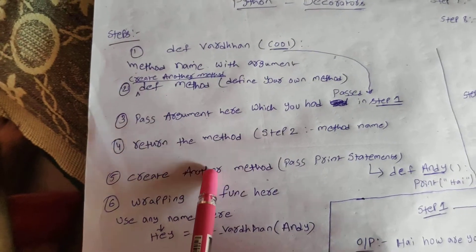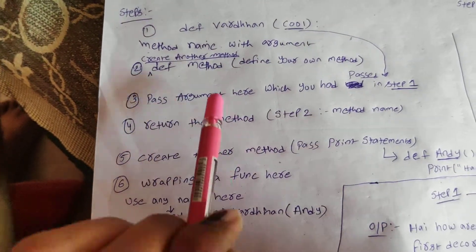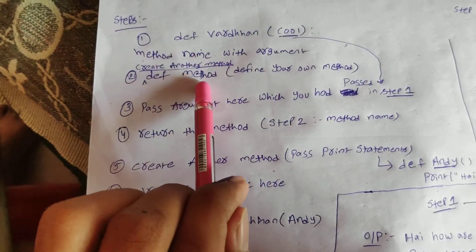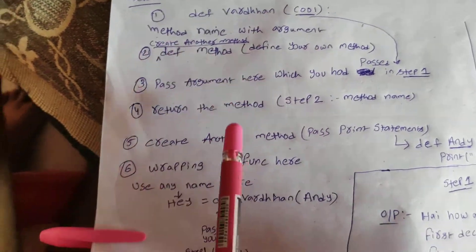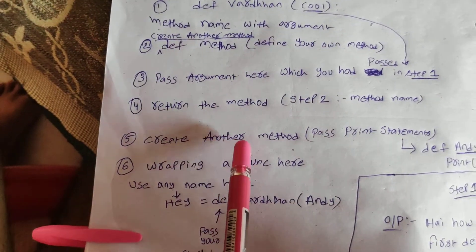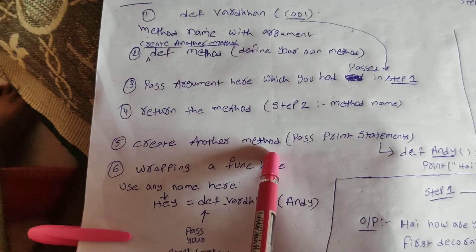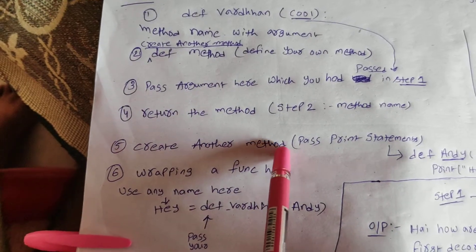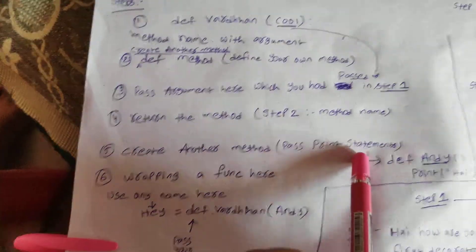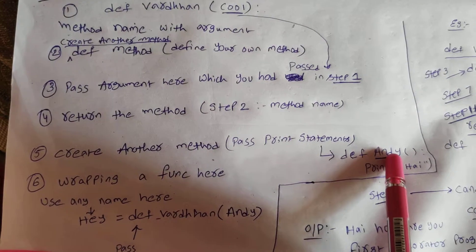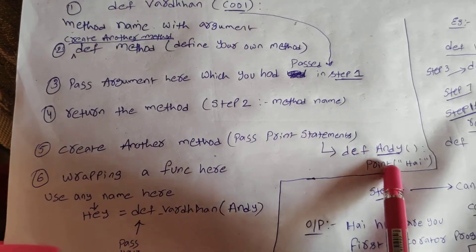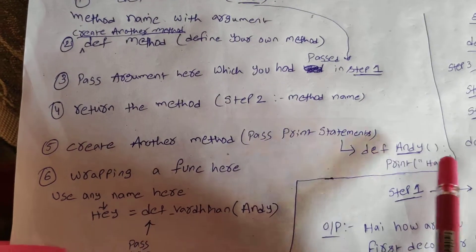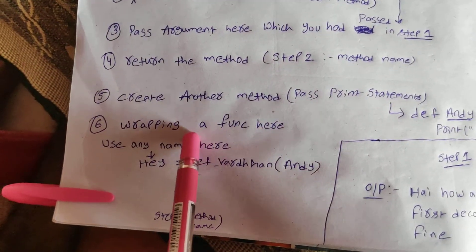Make sure you can call your argument name, and after that you can give any print statement after this argument name. Now you are going to return the method name here — our method name is def method, so I'm going to return my method name, only method. After that I'm going to create one more method function. Here I have created def andy, and I had given a print statement here.